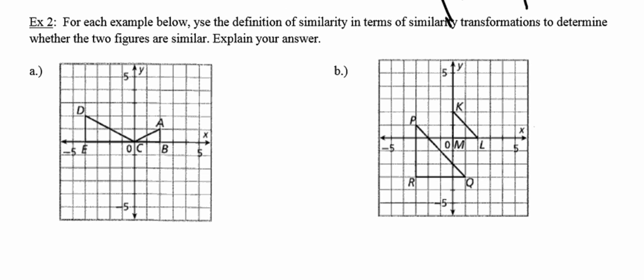Down at the bottom of the page, they want us to do the same thing — there's a typo, should say 'use' — use the definition of similarity in terms of transformations to determine whether or not two figures are similar. Can we use a sequence of similarity transformations to map one figure onto the other? Starting with letter A and the small triangle: if I flip it over the y-axis, its image is going to be the red triangle. Then I need to dilate to make it larger. If I dilate by a scale factor of two with a center at C, it maps right onto the purple triangle. So yes, these two are indeed similar.